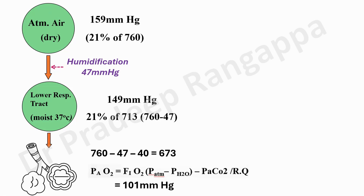It's 0.21 × 713. As the air goes down into the alveoli, there is a further drop in oxygen level — that would be around 673. At the alveolar level, carbon dioxide also comes into play. The alveolar oxygen is given by the equation: FiO2 × (atmospheric pressure − water vapor pressure) − PaCO2, because CO2 gets admixed at the alveolar level. Your effective alveolar oxygen level comes down to 101 mmHg.